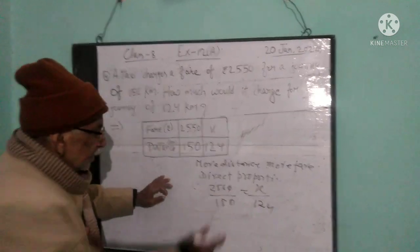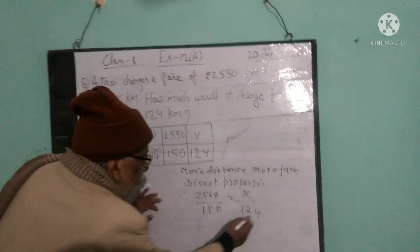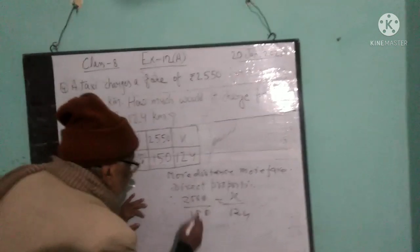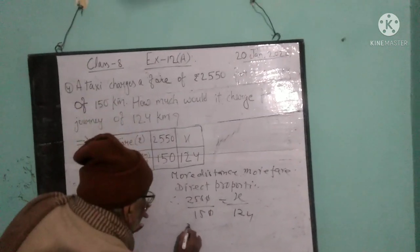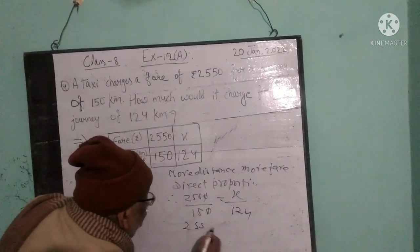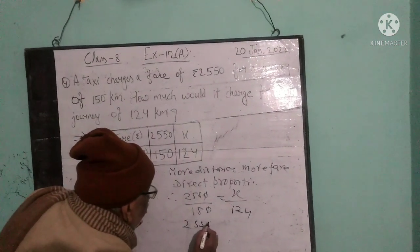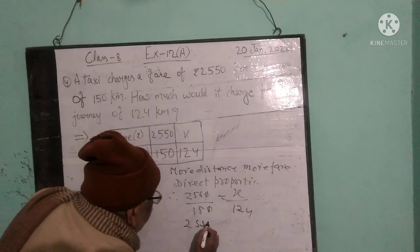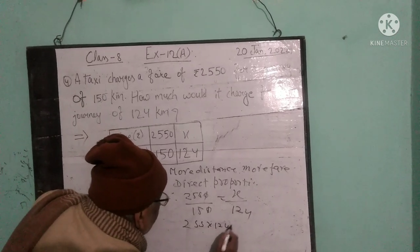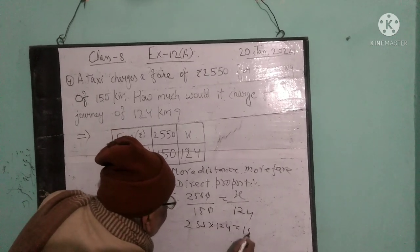2550 by 150 equals X by 424. That is 255 into 24 equals 15X.